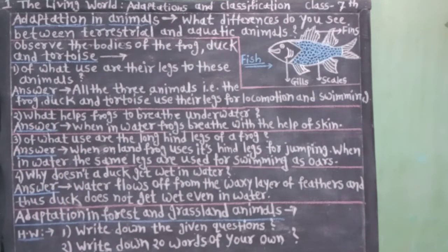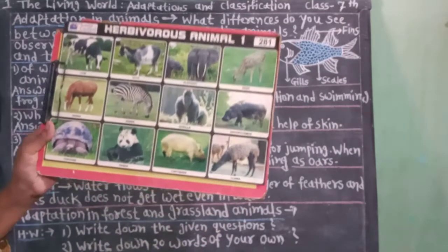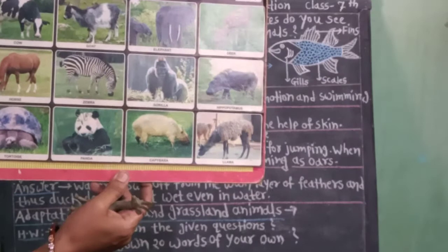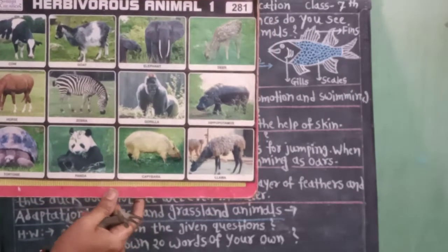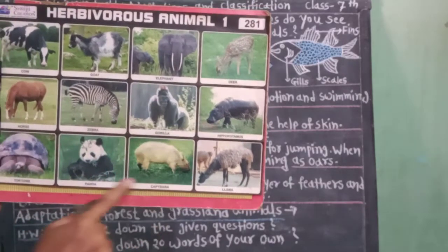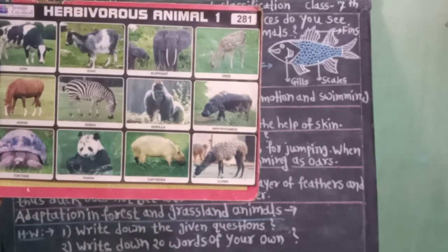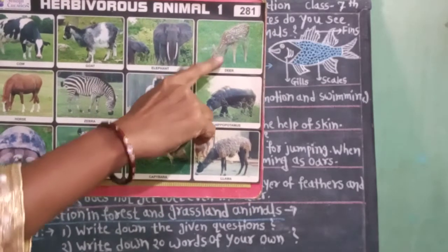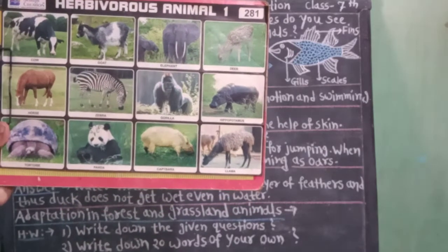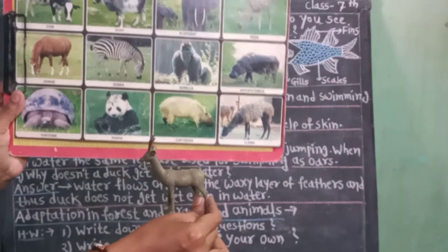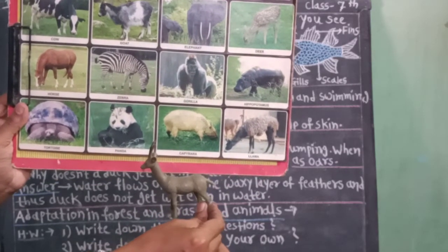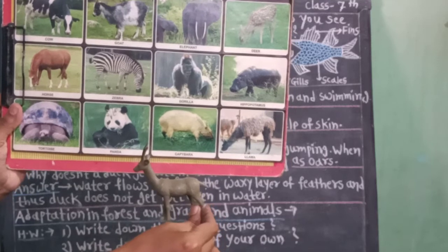Look at this chart. Herbivorous animal — herbivorous animal means shakahari pranik. Look at different types of herbivorous animals. Deer — deer means harin. Black buck — black buck means kalvit.